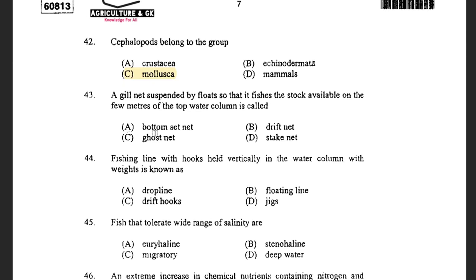Next question: A gill net suspended by floats so that fish stocks available in the few meters of the top water column is called a — options are bottom set net, drifter net, ghost net, and stake net. The answer is drifter net. Drifter net is kept afloat at a proper depth using weights and buoys, whereas certain nets are attached to poles or fixed in a substratum using anchor to prevent net movement.